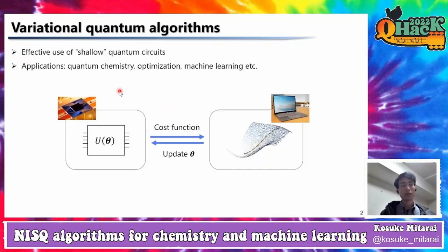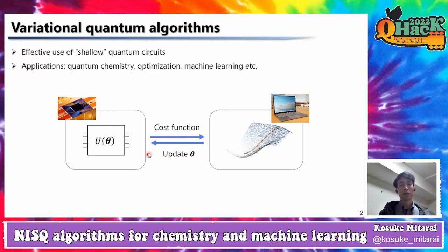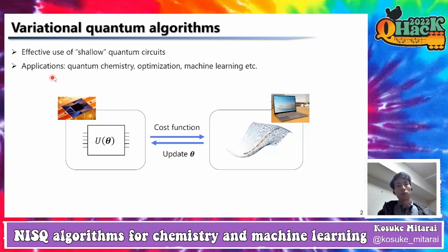As you all know, most NISQ algorithms are variational quantum algorithms, where we use a parameterized quantum circuit U theta, obtain some output from this circuit, compute the cost function on the classical computer, and update theta to optimize this cost function — for example, to minimize it. We tune the parameter theta on the quantum computer and loop through this process. These variational quantum algorithms are attracting attention because we can effectively use shallow quantum circuits by training them. Applications range from quantum chemistry and optimization to machine learning.